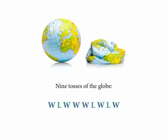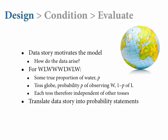Let's say we've done this. We've tossed it nine times and we get this sequence of data: a water, then a land, and three waters, and a land, and a water, and a land, and a water. From this sequence of observations, how do we translate this into a logical estimate of the proportion of water covering the globe? Let me walk you through the simple Bayesian way to do this — going through the three steps of the design loop: design, conditioning, and evaluation.